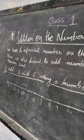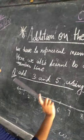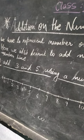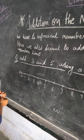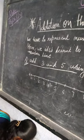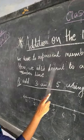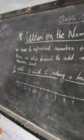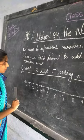Number line pe addition kaise karte hain — how we do addition on the number line. We have to represent numbers on the number line. First we will represent the number line. Here we will also learn about adding numbers using the number line. I already draw a picture of a number line.